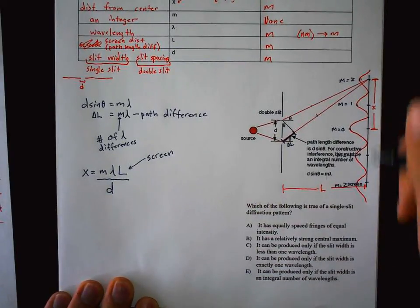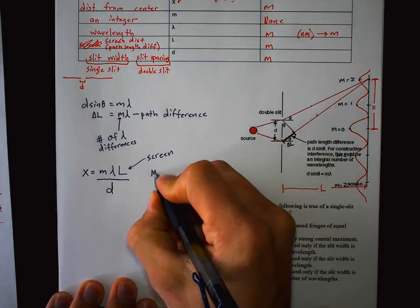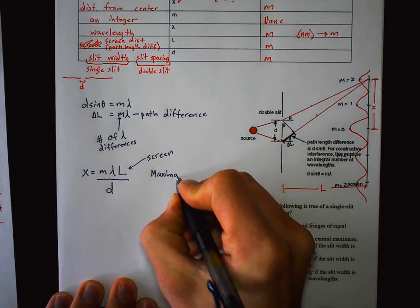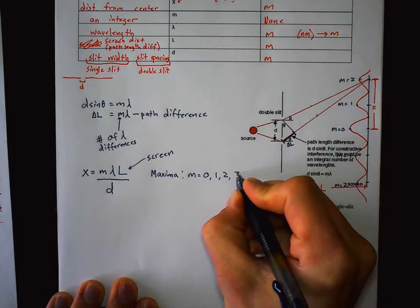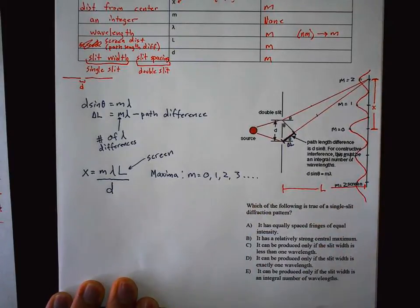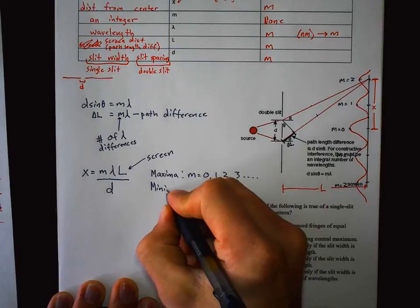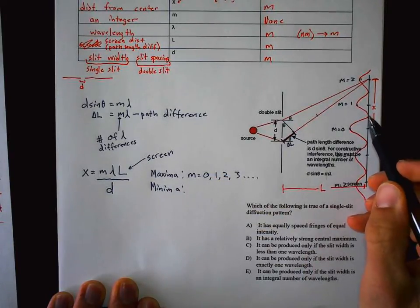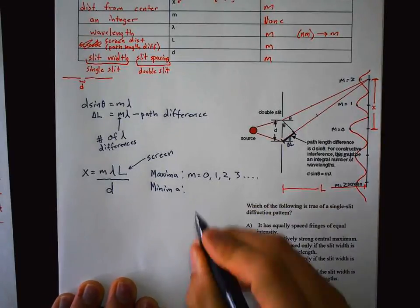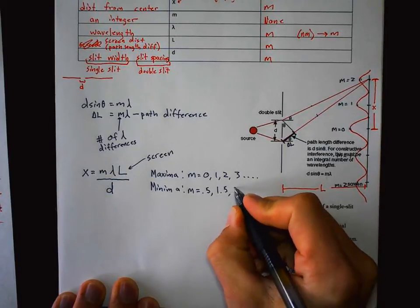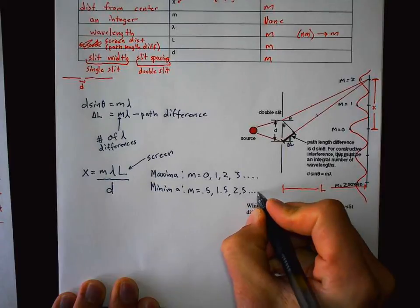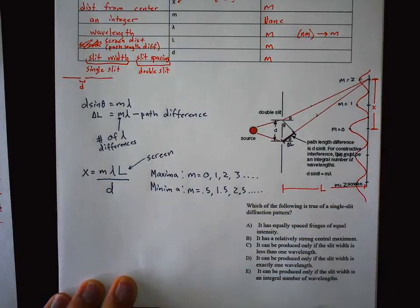For double slit, maxima occur at m = 0, 1, 2, 3, and so on, getting dimmer and dimmer. We need to know that and be able to draw or analyze that graph. Minima — dark spots where destructive interference happens — occur at m = 0.5, 1.5, 2.5, and so on.